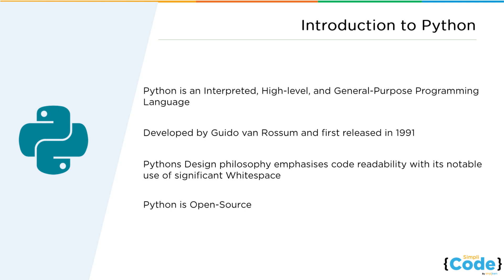The term 'interpreted' means that we don't need to compile our instructions in Python. Computers need low-level language to understand our code, and converting from high-level to low-level is called compilation. In most languages such as C, there's a special compilation process after you create your code. With Python being an interpreted language, we can see results right away — our Python runtime does all the conversion from high-level to low-level as we type, which speeds up the process and makes programming much easier.